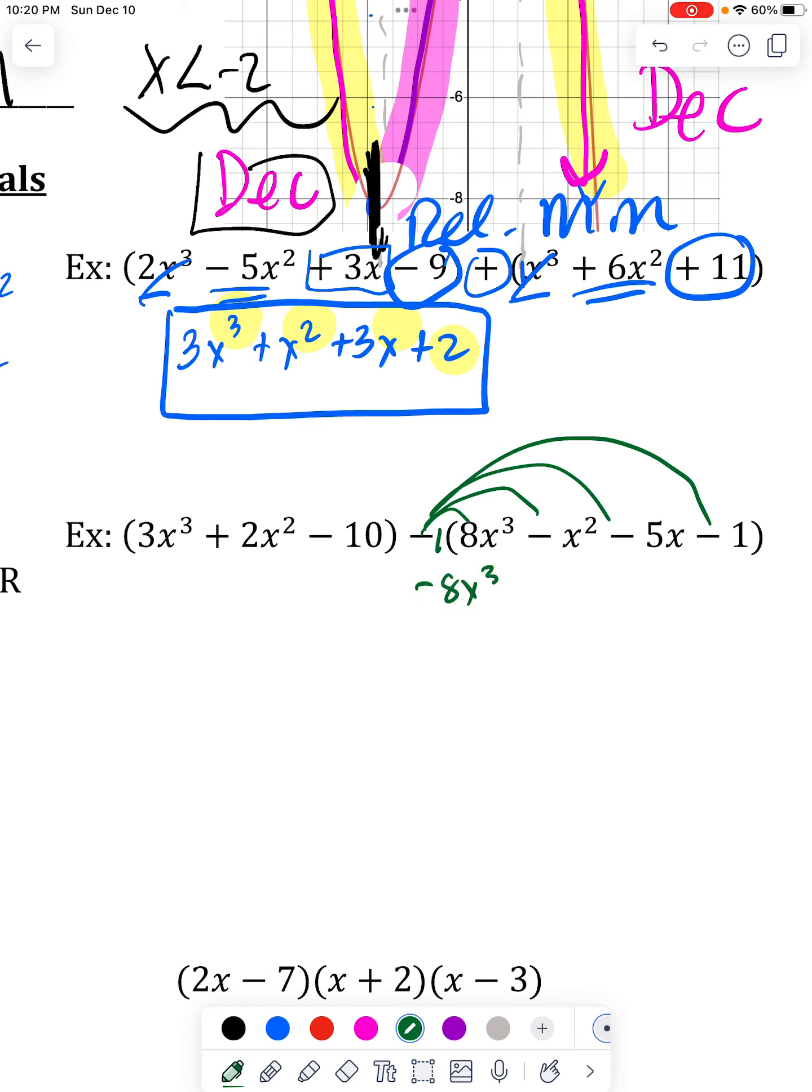So I would just rewrite this. Negative times the negative here turns positive. Negative times the negative here turns positive. And negative times this negative turns positive.